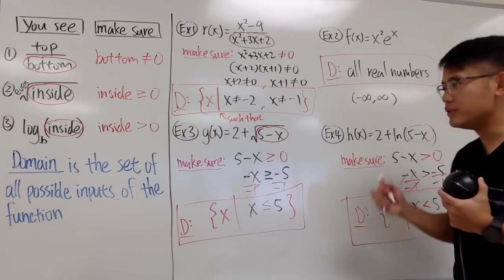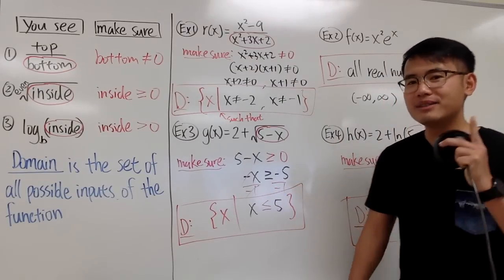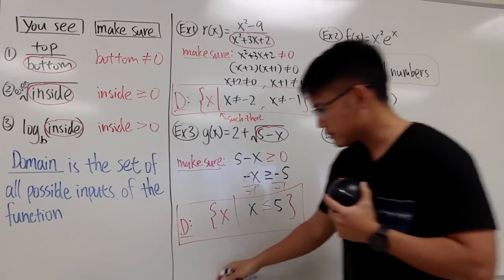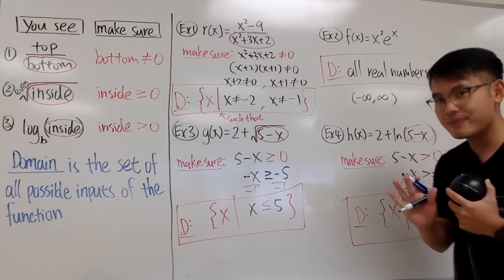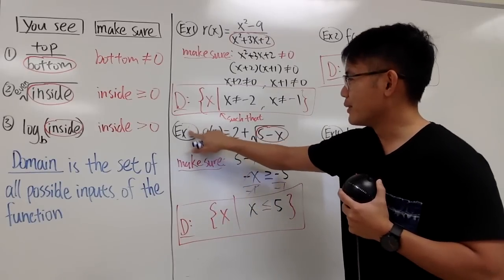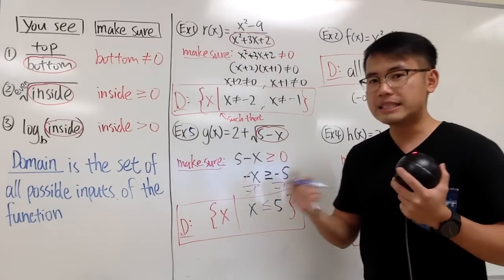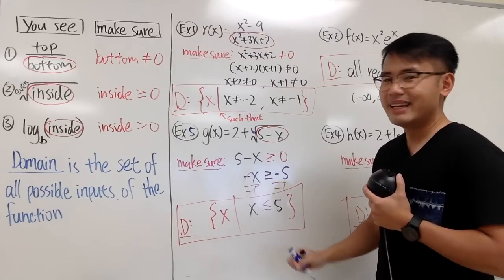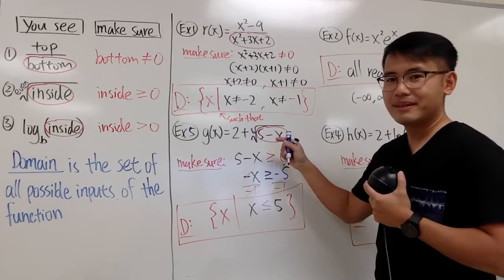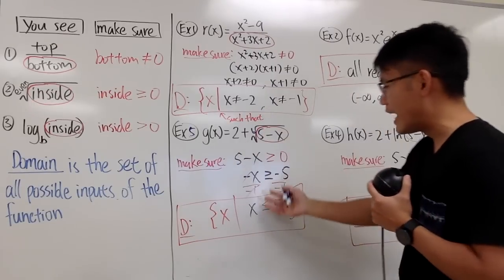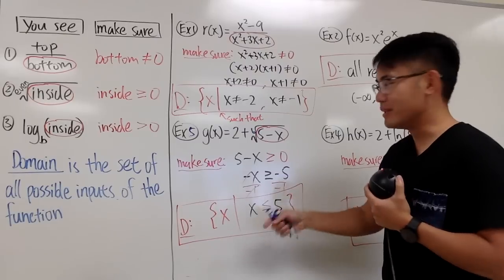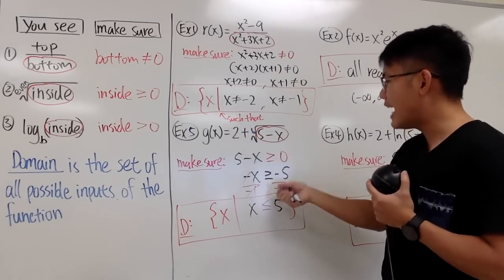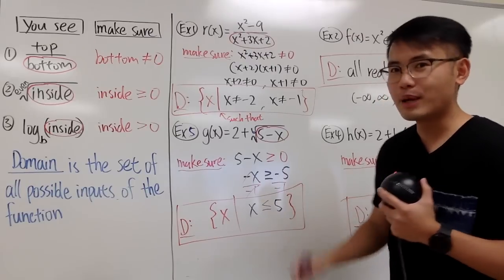Hopefully you find this helpful. I showed four examples, but let me show a few more to make it super clear. Example 5: g(x) = 2 + ⁶√(5 − x), a 6th root. Guess what? It's the same work as what we did earlier, because when you have a 6th root, you are still talking about an even root — just like the square root. You still make the inside greater than or equal to 0 and solve. So the answer and the domain are the same as the square root example.